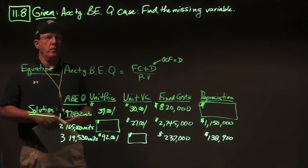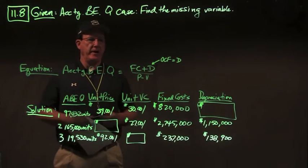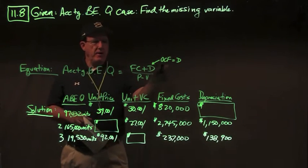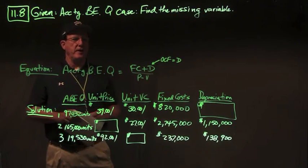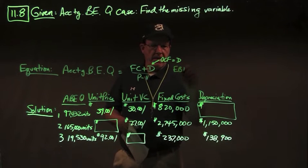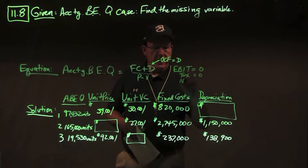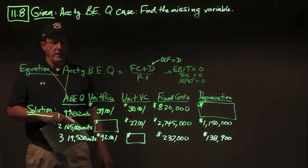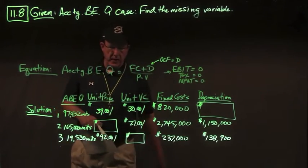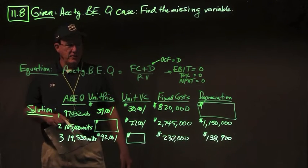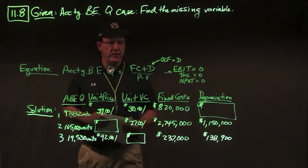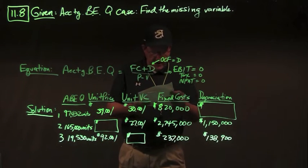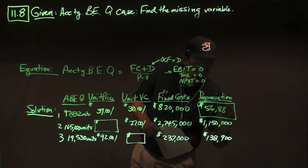In problem 11.8, we find the missing variable in three cases using the accounting break-even equation: fixed cost plus D over P minus V, where OCF equals depreciation because EBIT, taxes, and net income are all zero at accounting break-even. Case one: 97,432 units equals ($820,000 plus X depreciation) divided by ($39 minus $30 contribution margin). Solving gives depreciation of $56,888.